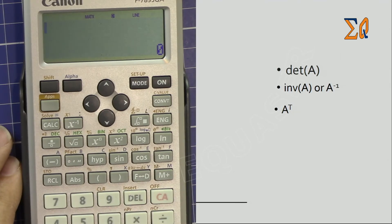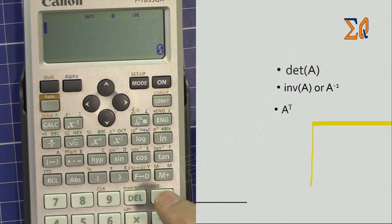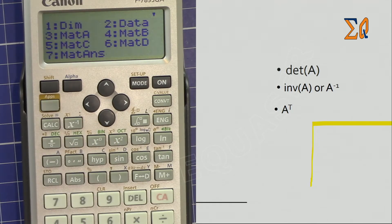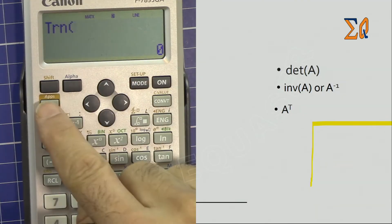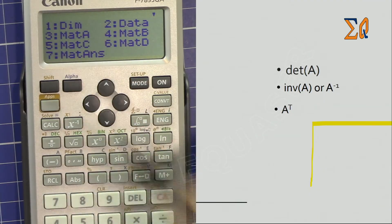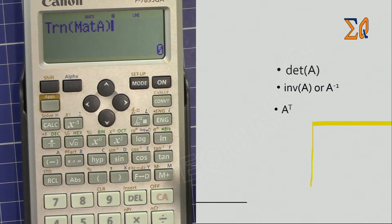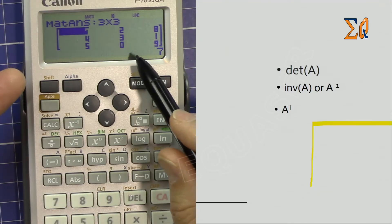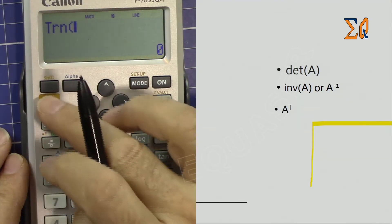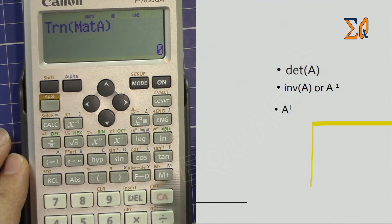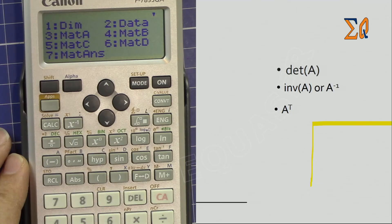The transpose of a matrix converts all columns to rows and rows to columns. To get the transpose in a calculation — for example, transpose of matrix A plus matrix B — press Apps, use the down arrow, and select number two for TRN (transpose). Bring matrix A, then press plus, then bring matrix B with number four. Press equal to get the result.